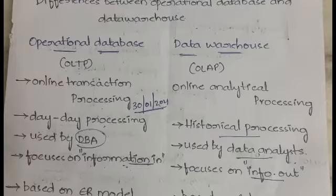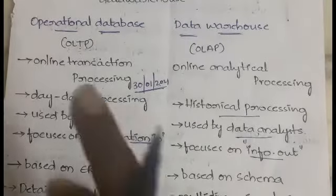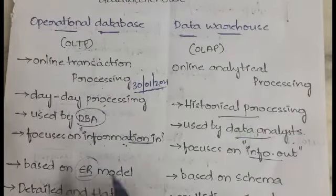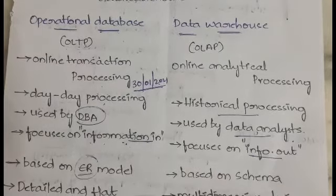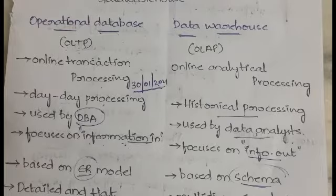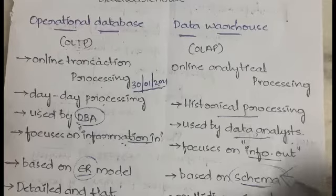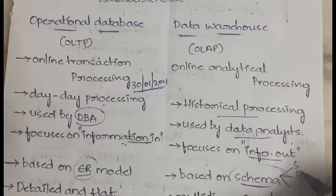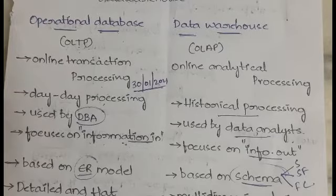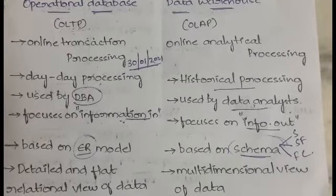A database is based on the ER model — the entity relationship model — whereas a data warehouse is based on schema. Schema is a structural representation of data. In data warehouse we have three types of schemas: star schema, snowflake schema, and fact constellation schema. These will be explained separately in the next video.